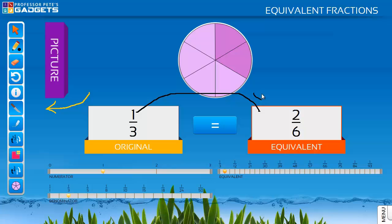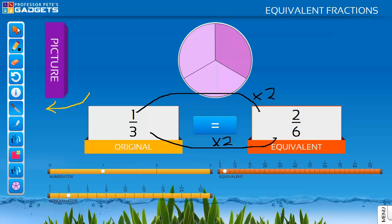This shows that the numerator and denominator are multiplied by two, as both are changed at the same time. One third becomes two sixths. The shape will animate, allowing students to process what is taking place.